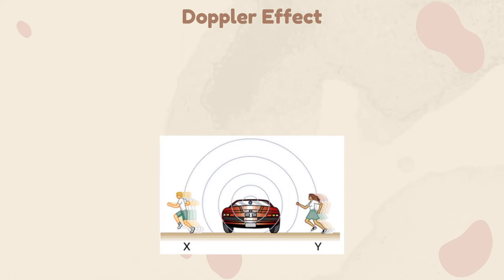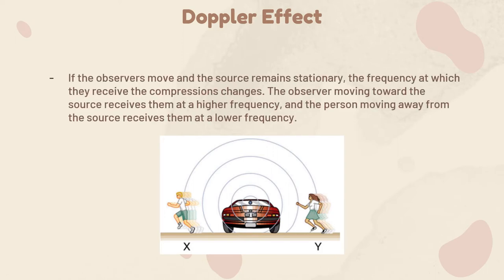In the last case, the car remains stationary but the observers are moving. Person Y runs towards the car and will receive sound waves at a higher frequency, so the pitch sounds higher. Person X runs away and receives sound waves at a lower frequency and longer wavelength. There's really no significant difference between a moving source and a moving observer — it's the relative motion between source and observer that matters.